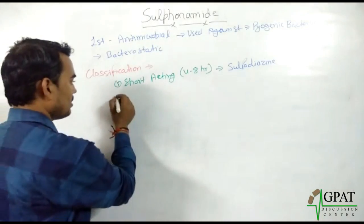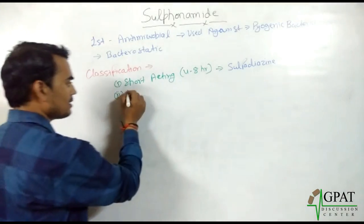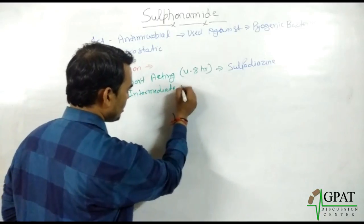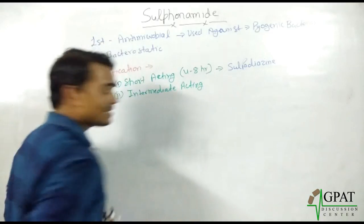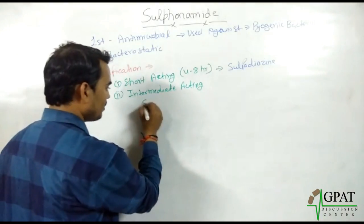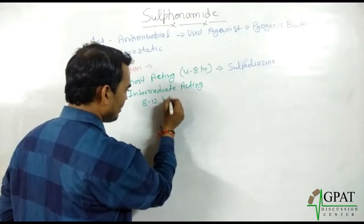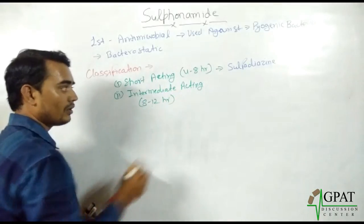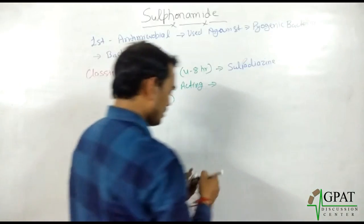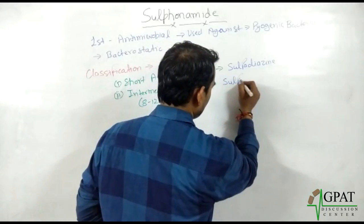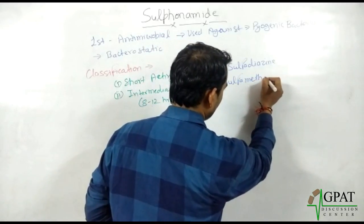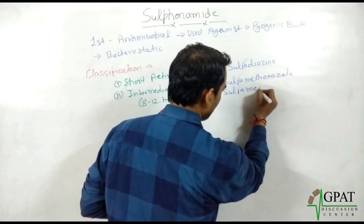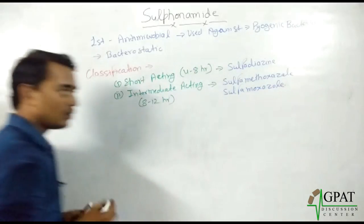The next class of sulfonamide is intermediate-acting. Intermediate-acting drugs have a half-life of 8 to 12 hours, which is more than the short-acting class. The drug names are sulfamethoxazole and sulfamoxazole.